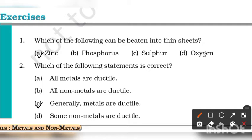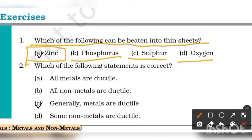Let's start with question number 1. The question is asking which of the following can be beaten into thin sheets? Metals have a property that we can convert them into thin sheets. First we will look at which is metal. Phosphorus is a non-metal, sulfur and oxygen are non-metals. Zinc is a metal, so we can convert it into thin sheets.